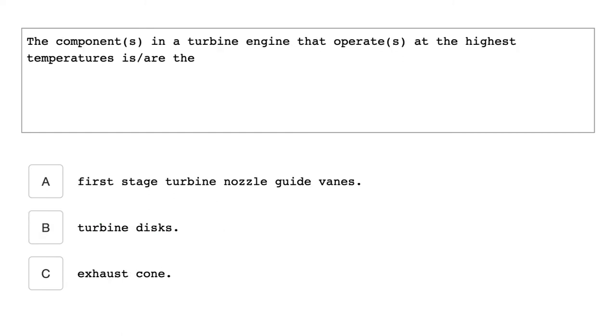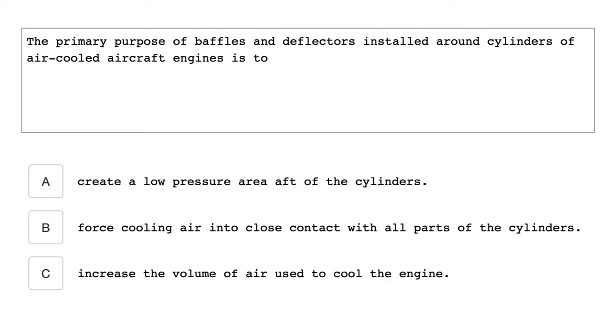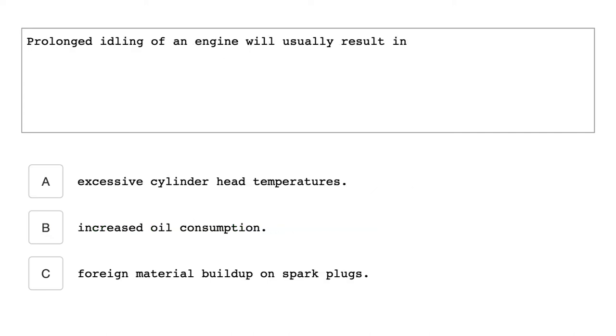The component in a turbine engine that operates at the highest temperature is or are the first-stage turbine nozzle guide vanes. The primary purpose of baffles and deflectors installed around cylinders of air-cooled aircraft engines is to force cooling air into close contact with all parts of the cylinder. Prolonged idling of an engine will usually result in foreign material buildup on spark plugs.